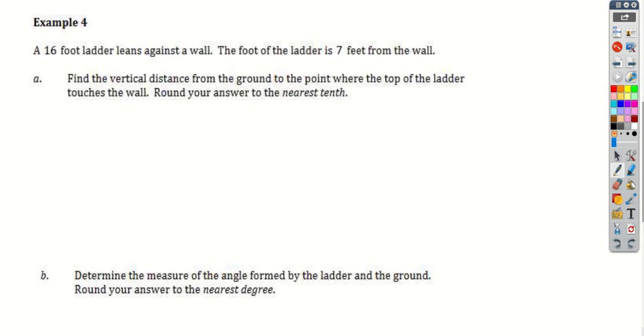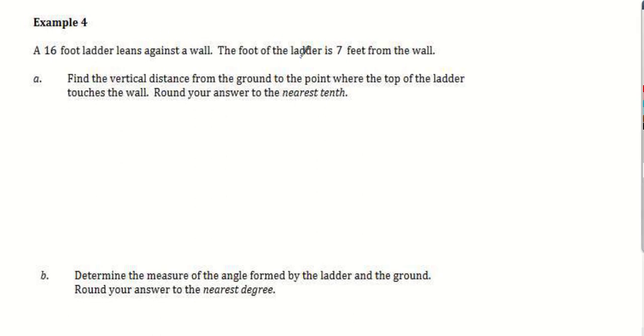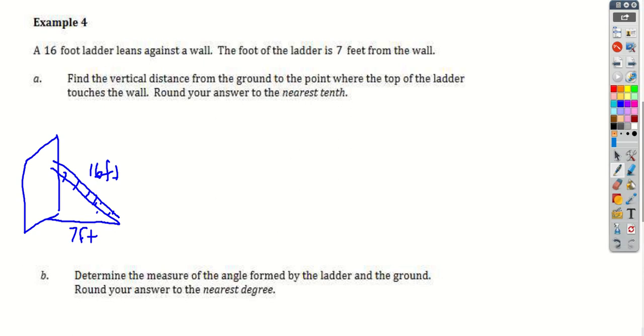Example number four. A 16 foot ladder leaning against a wall. The ladder is seven feet from the wall. So we need to draw a picture. We have a wall. And I have a ladder leaning up against my wall. The ladder we know is 16 feet. And the foot of the ladder, which means where the ladder hits the ground, is seven feet from the wall. So this distance to the wall is seven feet. And this is 16 again.